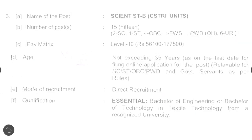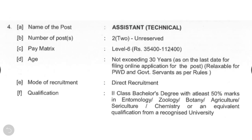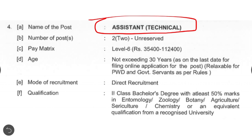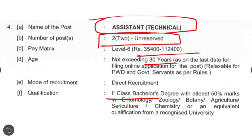The fourth and last post is Technical Assistant. Only two unreserved posts are available with a pay scale of rupees 35,400 to 1,12,400. Age limit is 30 years. Qualification required is a second class Bachelor's degree with at least 50 percent marks in Entomology, Zoology, Botany, Agriculture, Sericulture, Chemistry, or any equivalent qualification from a recognized university.